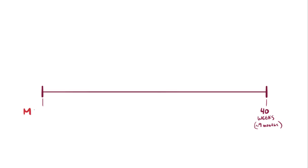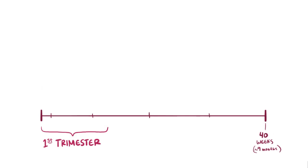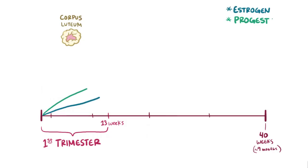A pregnancy lasts forty weeks, roughly nine months, but that's counted from the last menstrual period, which is usually about two weeks before day zero of ovulation. So if you're counting from day zero, a pregnancy is only about thirty-eight weeks. The reason for adding the extra two weeks is that women usually know the date when their last menstrual period began but have no way of knowing when they ovulated. During the first trimester, which is between weeks one through thirteen, hormones are being generated by the corpus luteum — mainly estrogen and progesterone.